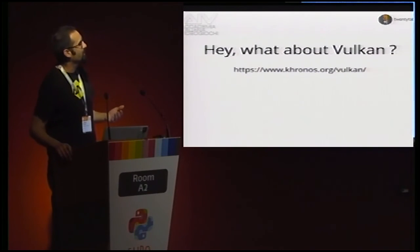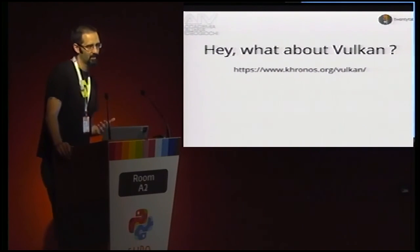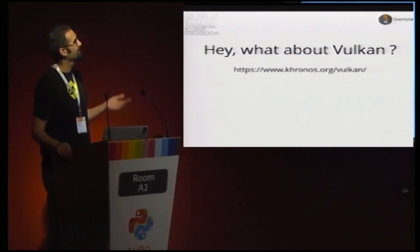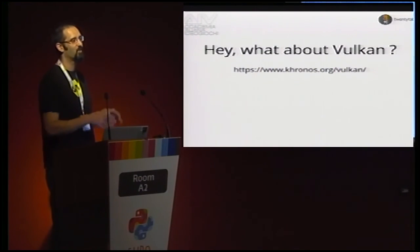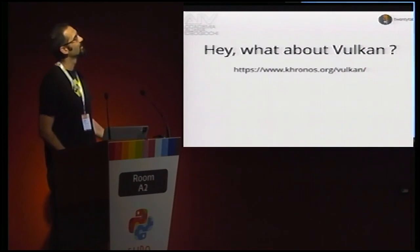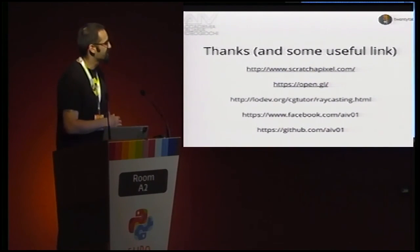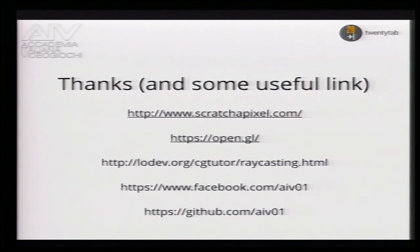What about Vulkan? Vulkan is a new standard also managed by the Kronos Group. It's a really low-level API — so low-level that the Kronos team told developers to start building layers between OpenGL and Vulkan because Vulkan is too complex. Very probably you will never develop directly with Vulkan but will continue developing with OpenGL as a bridge to Vulkan. Here are some useful links — the last one is the AIV didactic libraries repository where you'll find Python code. I strongly suggest checking the raycasting tutorial link, which describes how games like Wolfenstein 3D and Doom were implemented.